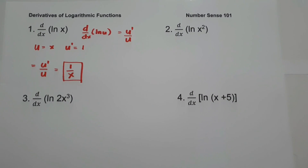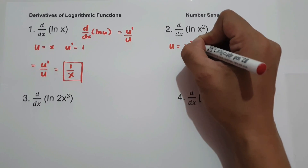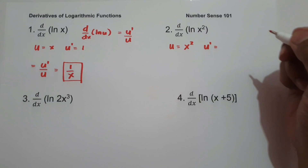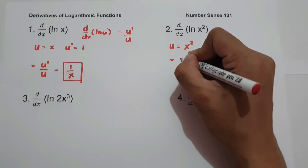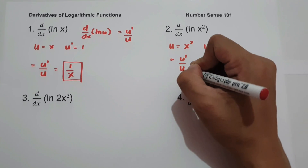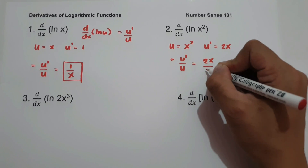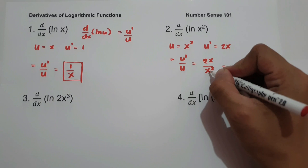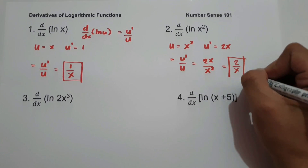Number two: what is the derivative of ln x squared? Let u = x², so u' = 2x. Applying u' over u gives 2x over x². We can cancel x with x², giving us 2 over x. This will be our answer.